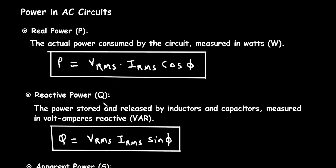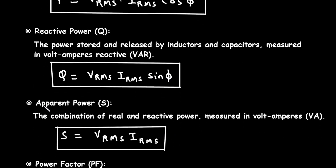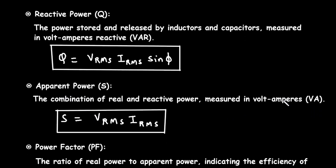Next is reactive power, represented by capital Q. It is the power stored and released by inductors and capacitors, measured in volt-amperes reactive (VAR). The formula is Q = Vrms × Irms × sin φ. Next is apparent power, represented by capital S. It is the combination of real and reactive power, measured in volt-amperes (VA). The formula is S = Vrms × Irms.